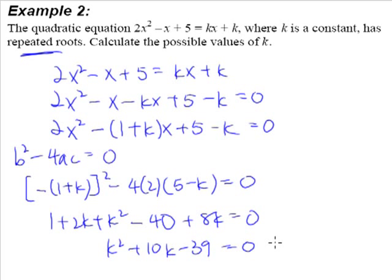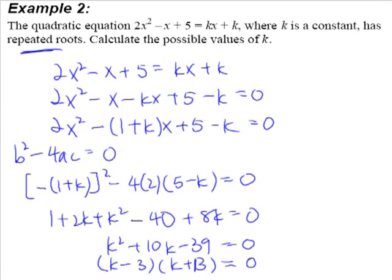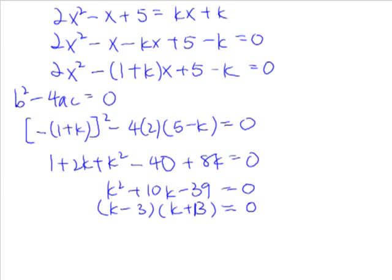Now, this quadratic equation is something that you can solve rather easily. Factorizing it, you get (k - 3)(k + 13) = 0. Let's scroll down. So we know that k = 3 or k = -13. We have calculated the possible values of k which satisfy what the question wants us to do. So this will be the answer.